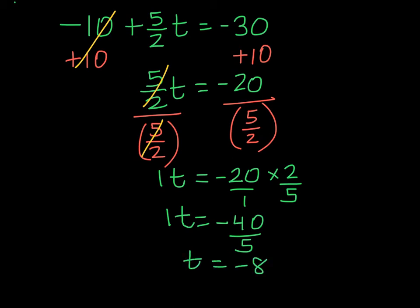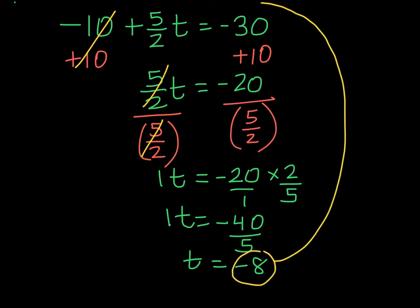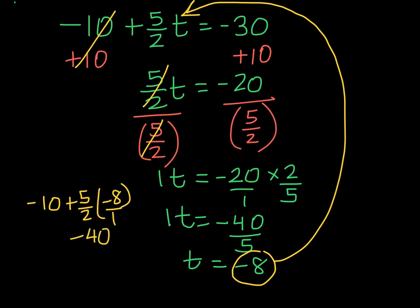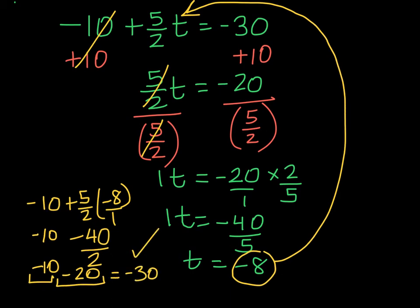At this point we can take our solution, substitute it into the original equation, and check. We have negative 10 plus 5 halves times negative 8. In the numerator, 5 times negative 8 gives me negative 40, and in the denominator I have 2, giving negative 20. On the left-hand side I had negative 10 all along. So if I owe 10 and I owe 20, I do indeed owe 30, which is what the equation stated. So we've solved it correctly.